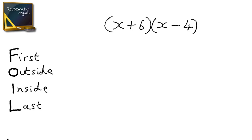Here we have another example. This is very similar to the first example, except we've now got a negative in the second bracket. But the process is exactly the same, so we start off by multiplying x by x to get x squared. Then we multiply x by minus 4 to get minus 4x. Then we multiply 6 by minus 4 to get minus 24.